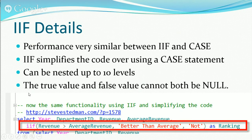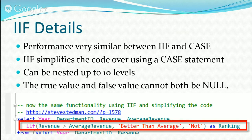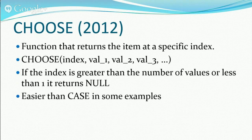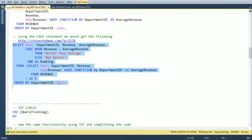One rule: the true and false value parameters cannot both be null. This makes sense — if both results are null, why use IIF at all? Just use NULL directly. Using IIF in the same revenue example: IIF(revenue > average_revenue, 'Better', 'Not Better') gives the same result as the CASE statement but in one clean line.